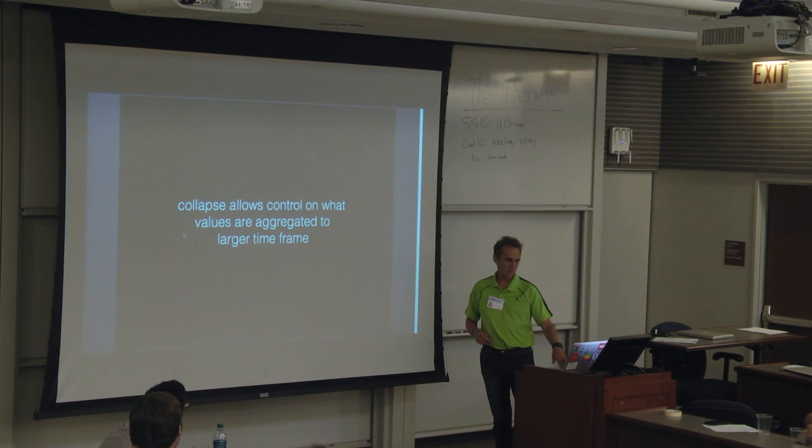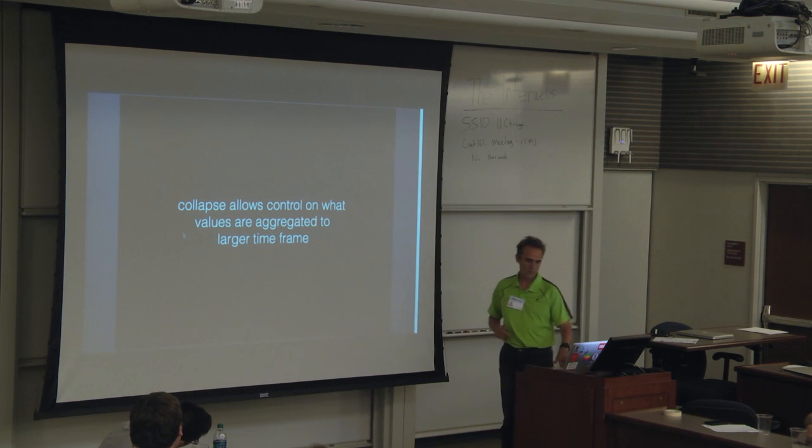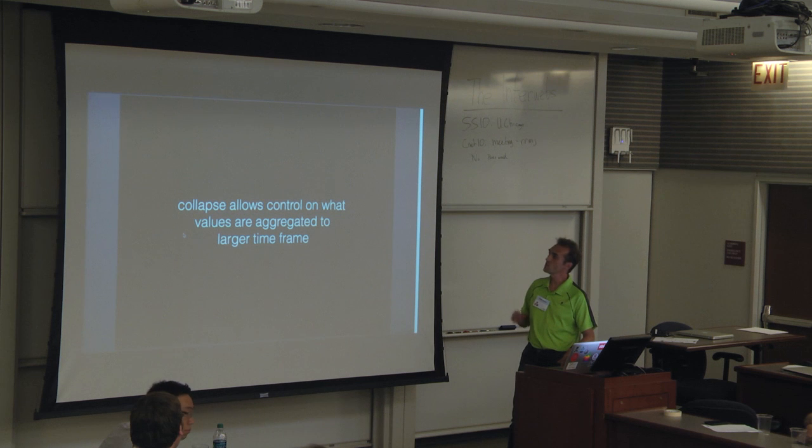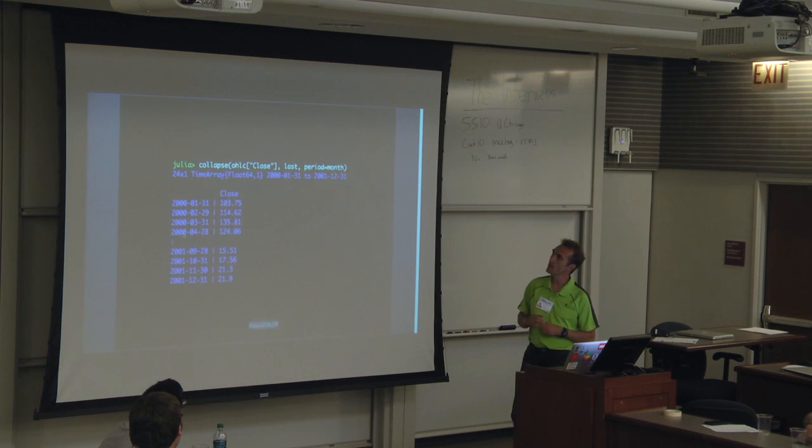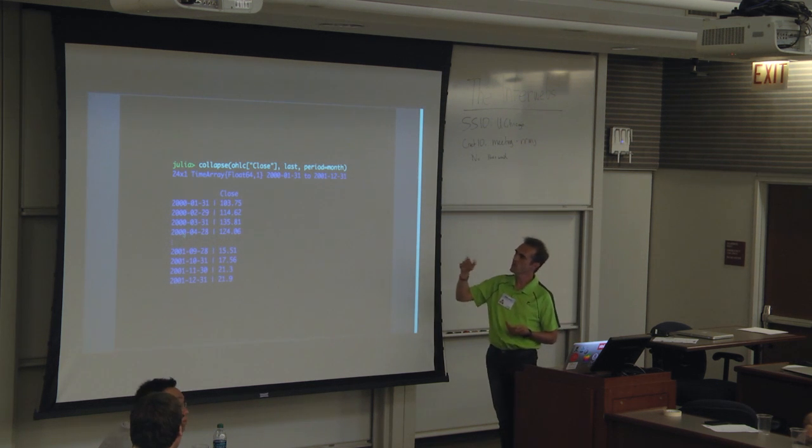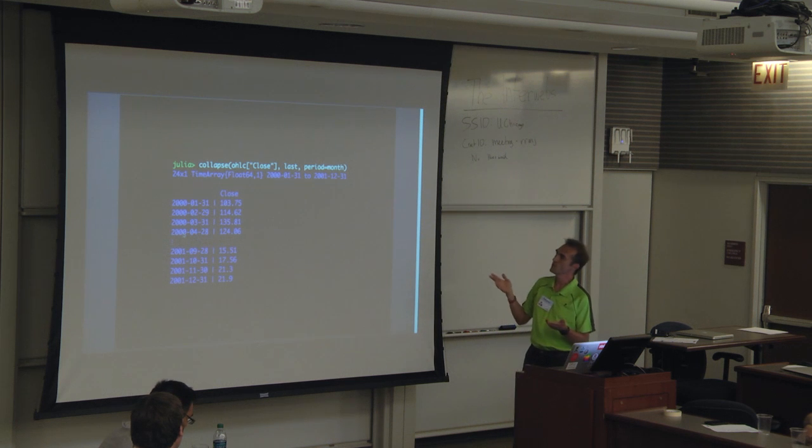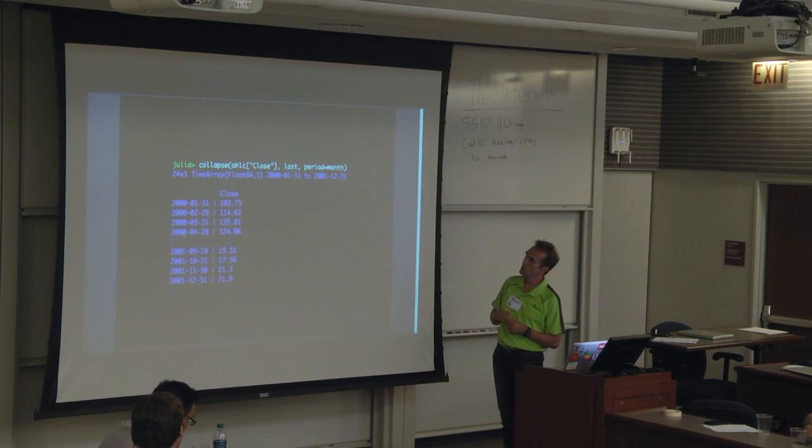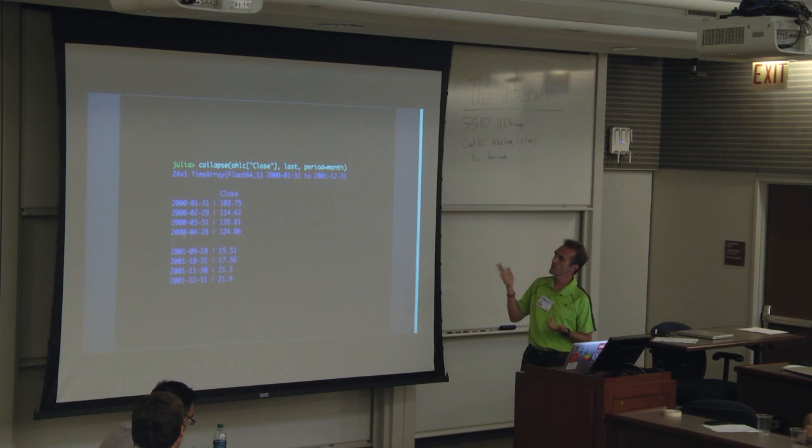You can also collapse on larger time frames from granular daily to monthly data. And doing that, we use a collapse method. Now, there's 22 observations or so in January, so you have to pick one of those or average them or do something. So we're passing a function as the second argument, and that's the last observation. That makes sense for the close and the period there is for the month.